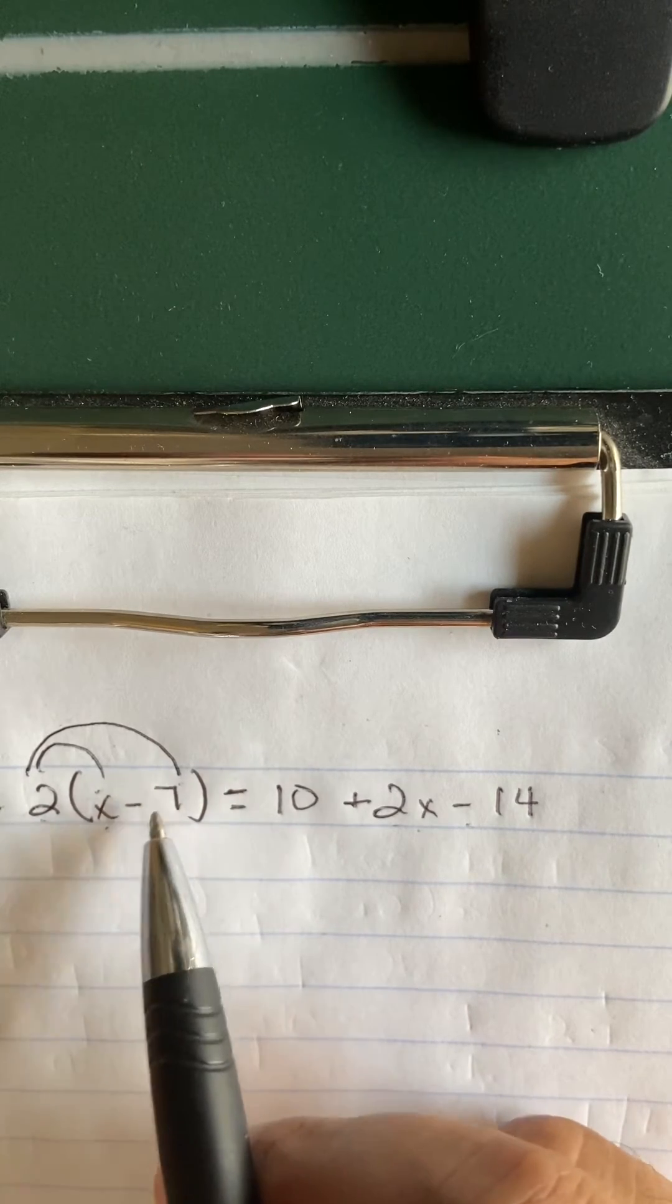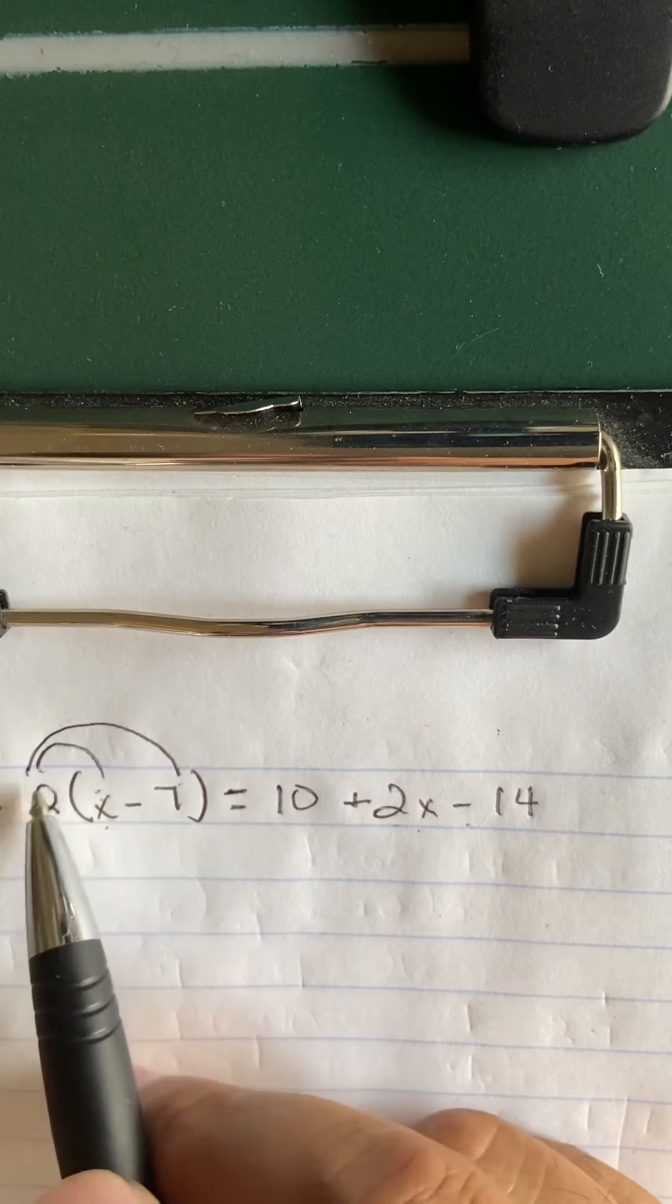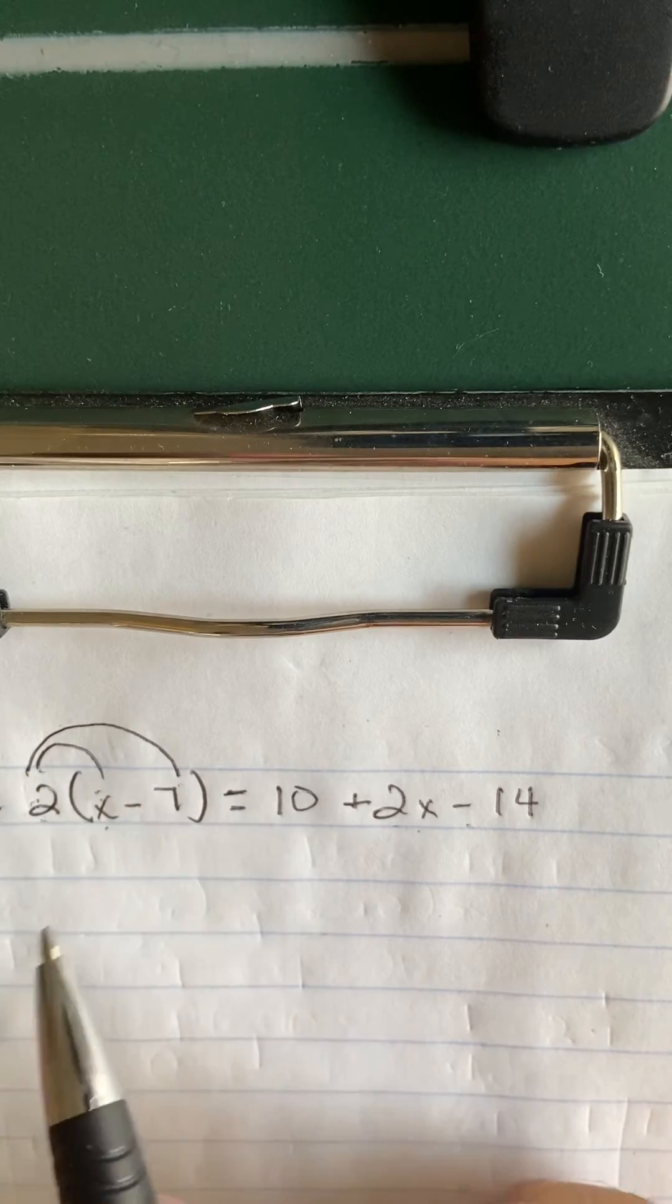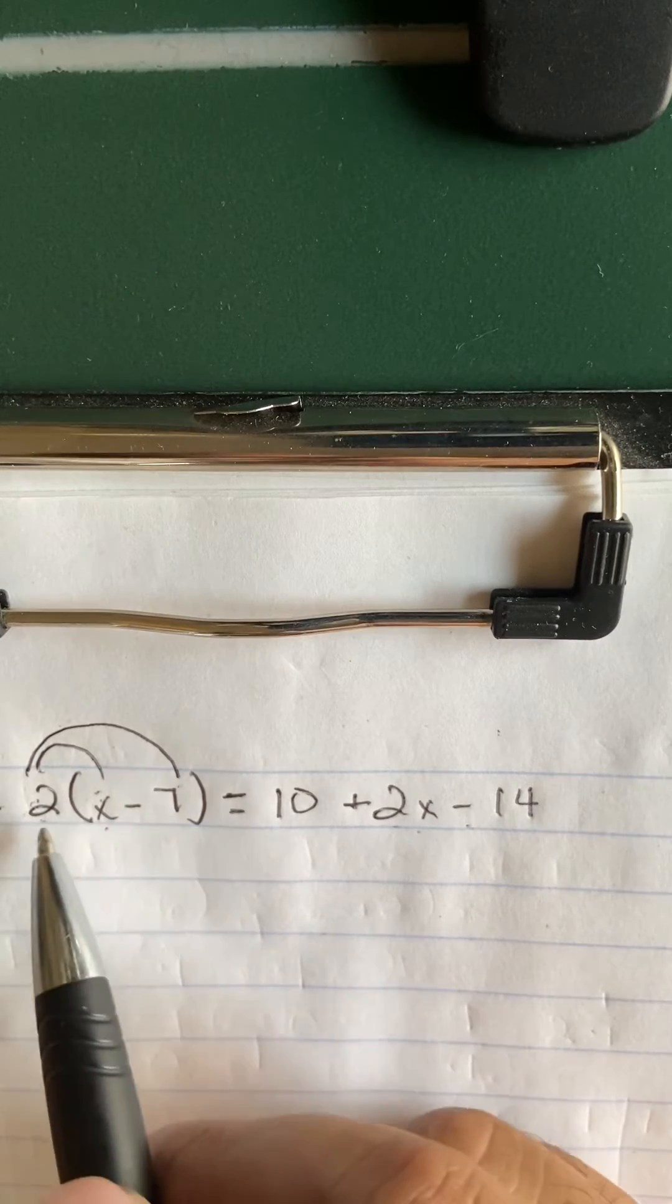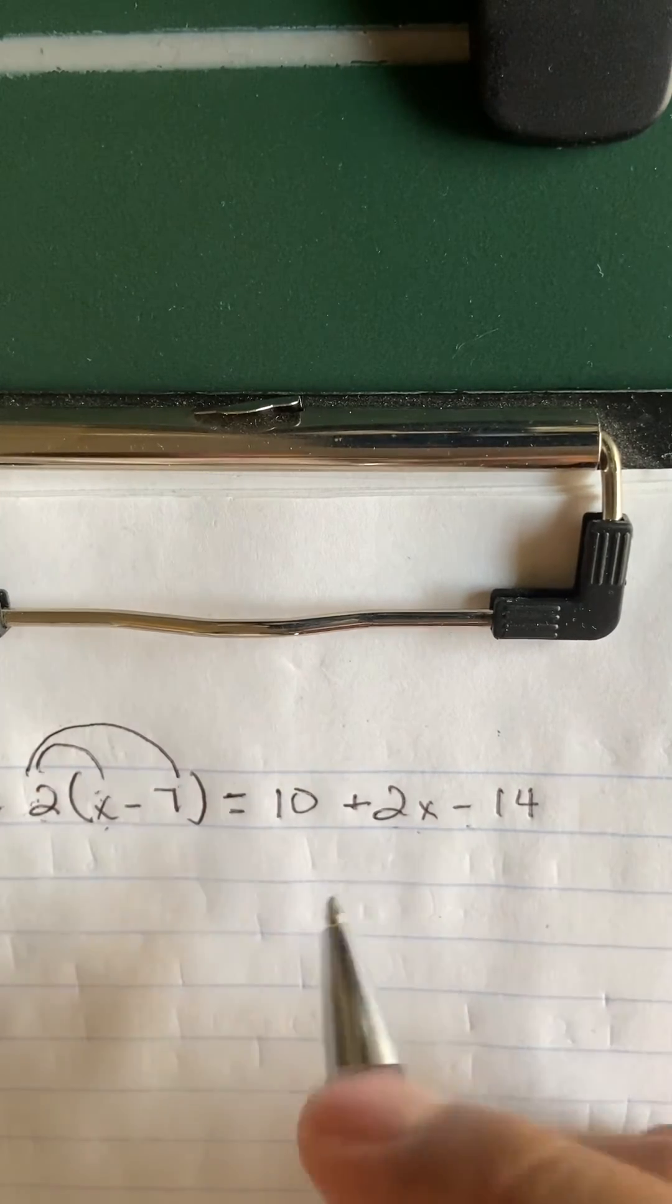...the second thing in the parentheses. Make sure you don't forget that. You got to give the 2 to the x, you got to give the 2 to the negative 7. Remember, it's called the distributive property, so you're giving something out and you got to be fair. You got to give this 2 to everything. Now when you got...